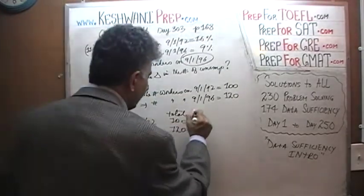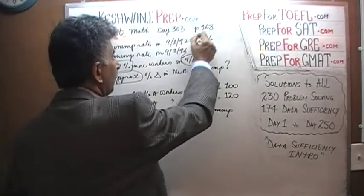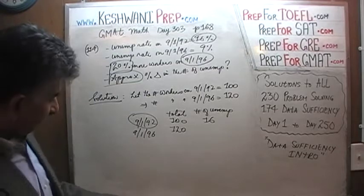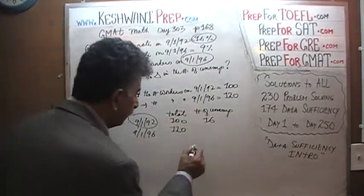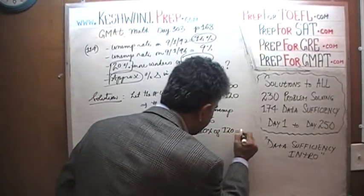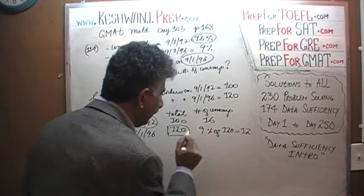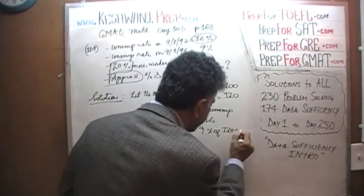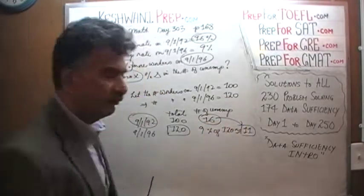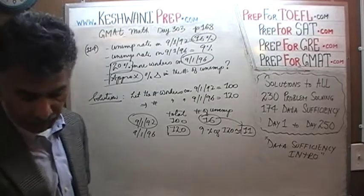Number of unemployed people: on September 1st, 1992, unemployment was 16%, and 16% of 100 is simply 16. By 1996, the unemployment rate dropped to 9%. Since 10% of 120 is 12, then 9% of 120 is approximately 11. We had 16 unemployed people to start with; by 1996 we only had 11 — a drop of 5.